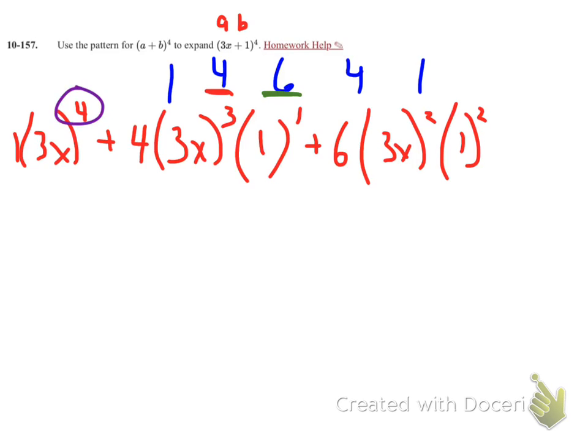Again, another pattern is my 3x - the exponent is going down, it's descending. And my b value, which is the 1, started off at 0, and then we have 1 and 2, and it's going to increase.